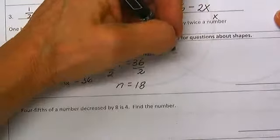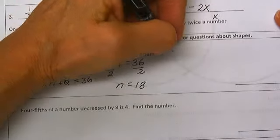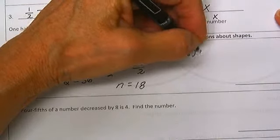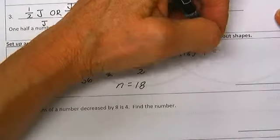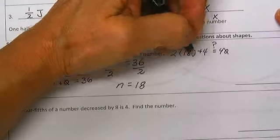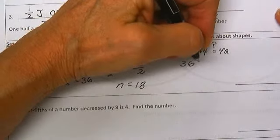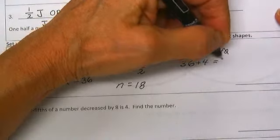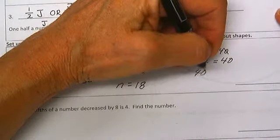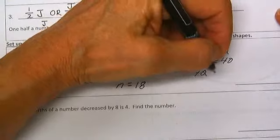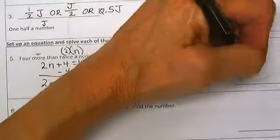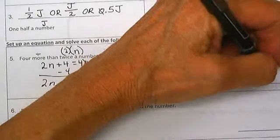Let's check. Is it true that 2 times 18 plus 4 is equal to 40? 2 times 18 is 36 plus 4 is equal to 40. Yep! N equals 18.